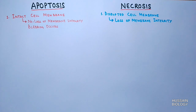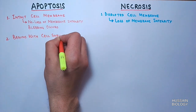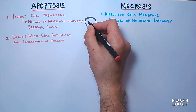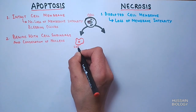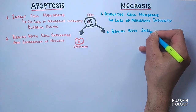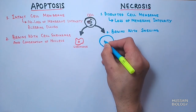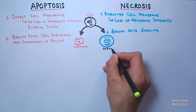Apoptosis begins by shrinking the cell and condensing the nucleus — if we draw the cell here, there is cell shrinkage in case of apoptosis. In necrosis, it begins with swelling of the cell; that means the same cell will swell when necrosis occurs, as you can see in this diagram.